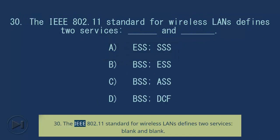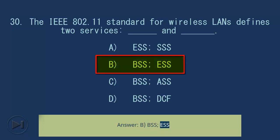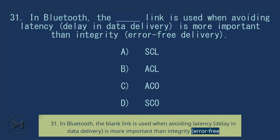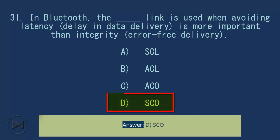Question 30: The IEEE 802.11 standard for wireless LANs defines two services, blank and blank. A. ESS, BSS; B. BSS, ESS; C. BSS, DCF; D. BSS, PCF. Answer: B. BSS, ESS. Question 31: In Bluetooth, the blank link is used when avoiding latency (delay in data delivery) is more important than integrity (error-free delivery). A. SCL, B. ACL, C. Echo, D. SCO. Answer: D. SCO.